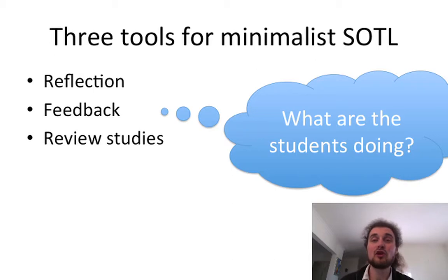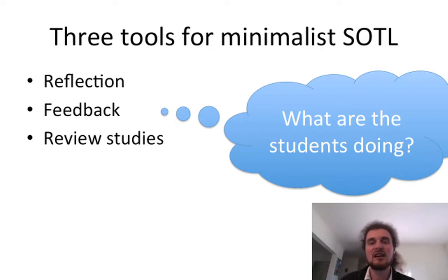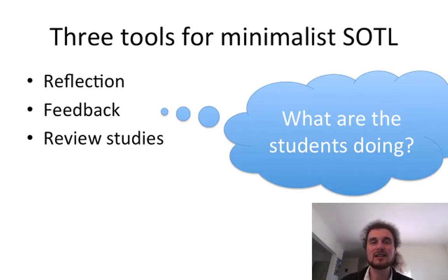So these are our three tools for minimalist scholarship of teaching and learning. Reflection: what happened, so what does that mean, now what do I do? Feedback: finding out what students are doing, what they think about it, what they want us to do more or less of, and whether they understand. And review studies: what has the broad scholarship of teaching and learning community come up with that can help me? When we're thinking about these, we've got to go back to what the students are doing — because learning is what the student does. When we read review studies, ask how they can inform what we might get students to do. Thanks a lot.